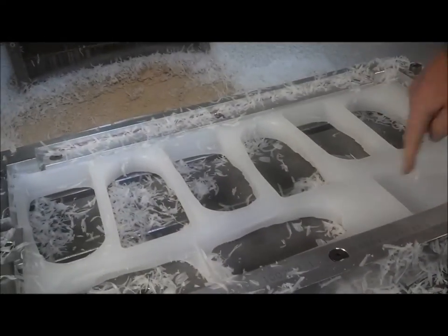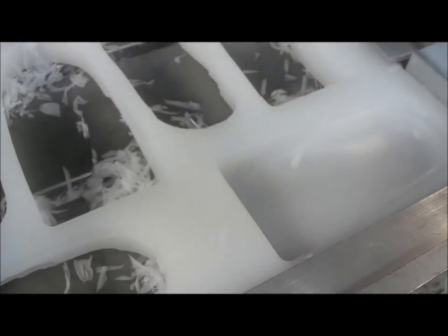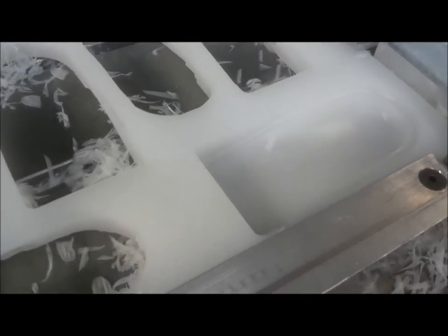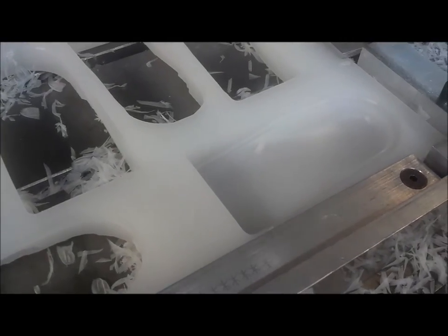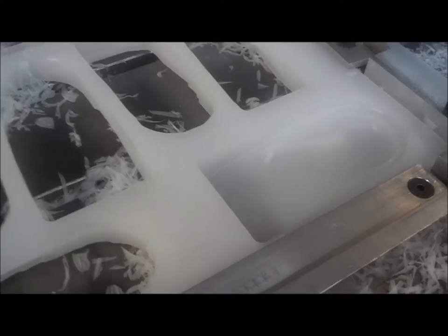And then after using this one to do all these transverse cuts, it'll change tools, and it'll use this pointed one to come in and cut out the perimeter of the device, leaving a series of small tabs so the device is still in place in the jig, but then we'll break those tabs, we'll cut those tabs to break the device loose.